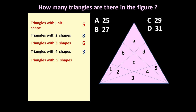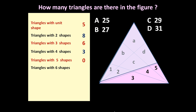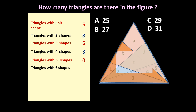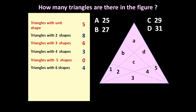Similarly, let us count how many triangles can be formed using five shapes. If you see the figure, using five different shapes not even a single triangle can be formed, so we write zero. Now let us count triangles with six shapes. One, two, three, and four — so four such triangles can be formed using six shapes.